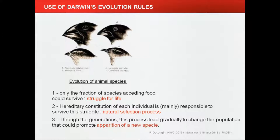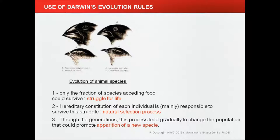Why do we talk about directed molecular evolution? Because to select an aptamer, we use all the rules of evolution described by Darwin for the evolution of animal species. It means struggle for life: in a population, only a fraction of species accessing the food will survive. It's a natural selection process depending on hereditary traits, and during successive generations, the population gradually changes, promoting the emergence of new species with even better structures adapted to the food.